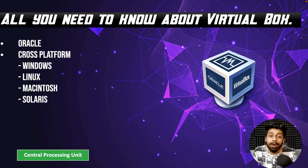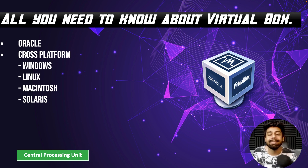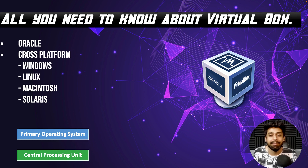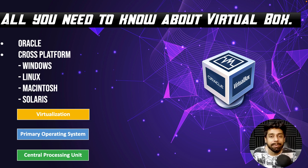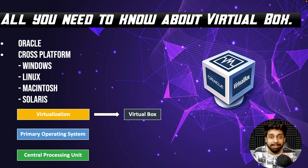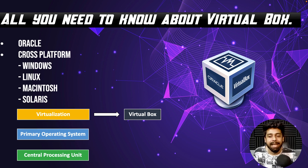If you talk about the flow or the mechanism of virtualization, you can see that there is one central processing unit in which you have your primary operating system, and your RAM and storage is allocated to your primary system. But right there, you can bring in a virtualization player — which is going to be VirtualBox throughout this course — and in VirtualBox, you can allocate storage, RAM, and choose the operating system as well.